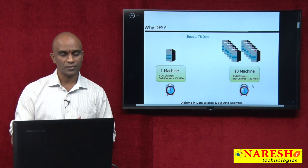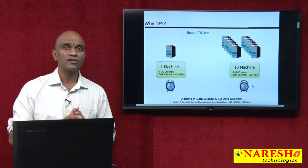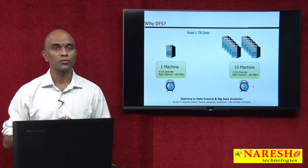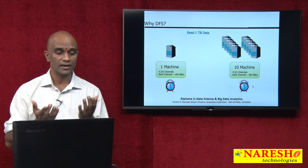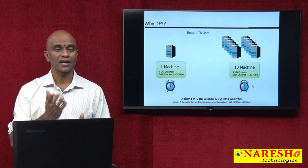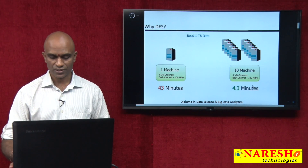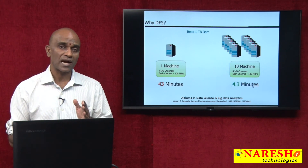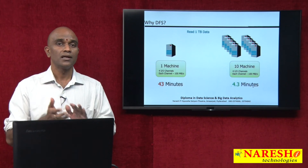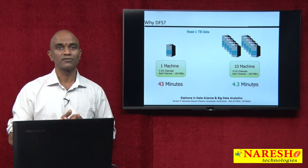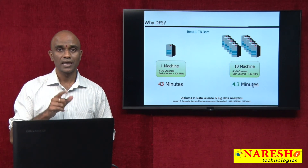Hadoop is a distributed file system. A distributed file system is a group of computers that act like one computer. Our data sits on 10, 100, or 1000 nodes, but for us it is as if it is sitting on a single computer — that is the magic of the distributed file system. For example, with one machine having 4 hard drives reading at 100 megabytes per second, reading 1 terabyte of data may take about 43 minutes. But with 10 machines, we can do the same task in 4.3 minutes. As we add more servers, our processing power increases and computation time reduces. The group of computers together is referred to as the distributed file system. With that, we will wrap up here for today and meet in the next session.